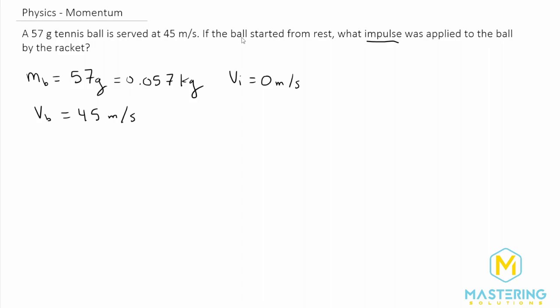They want to know what the impulse is for this problem. The impulse, J, is equal to the change in momentum. The change in momentum - anything delta or anything change - is going to be final minus initial. So P final minus P initial will give us our impulse.